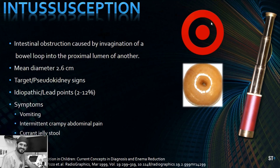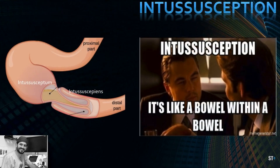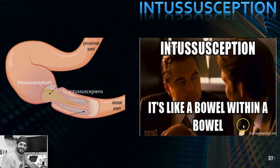The mean diameter of ileocolic intussusception is about 2.6 centimeters — much bigger than the 1.4 centimeters of small bowel intussusceptions. Most cases are idiopathic, though enlarged lymph nodes are thought to act as a lead point. Other causes include hemorrhages and Meckel's diverticulum. Symptoms include vomiting, intermittent crying, crampy abdominal pain, and currant jelly stool. A good mnemonic: like the movie Inception — a dream within a dream — intussusception is a bowel within a bowel.